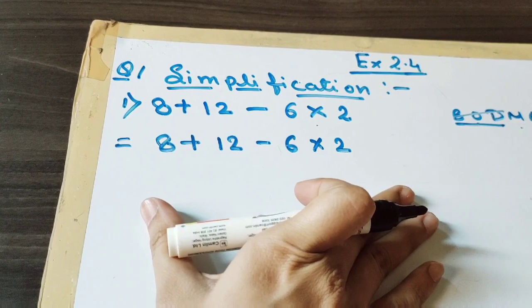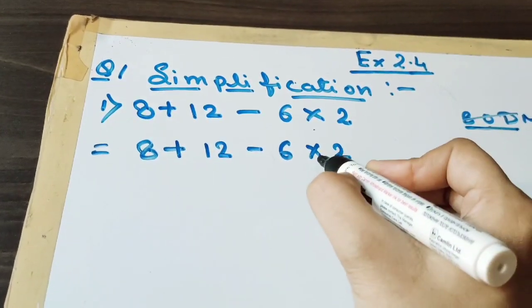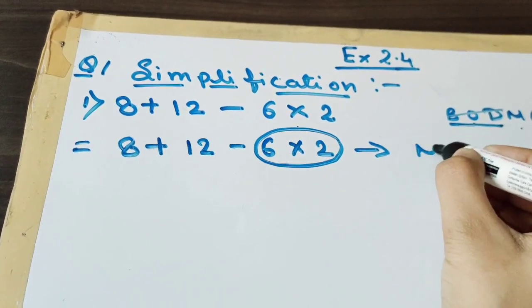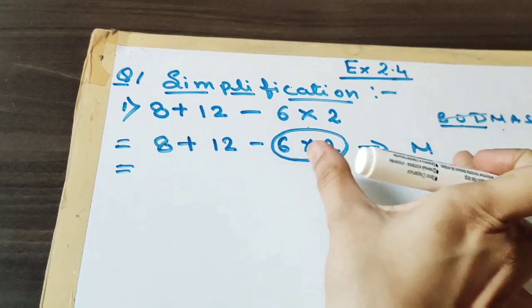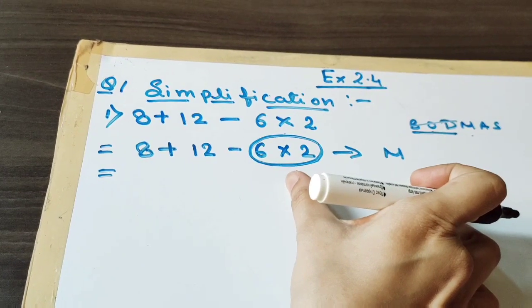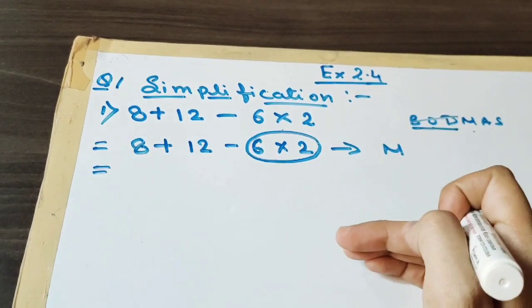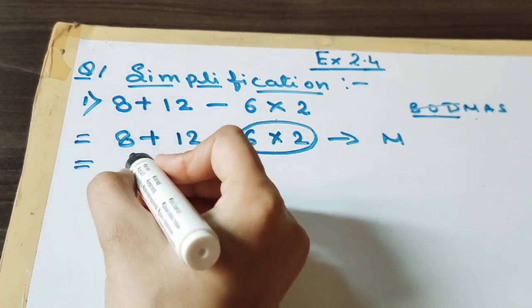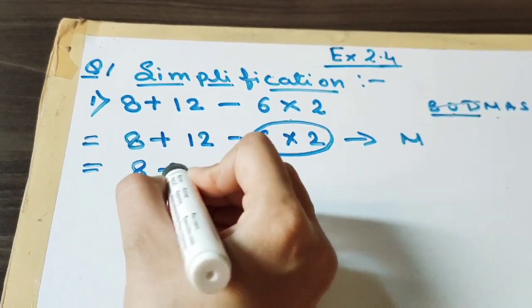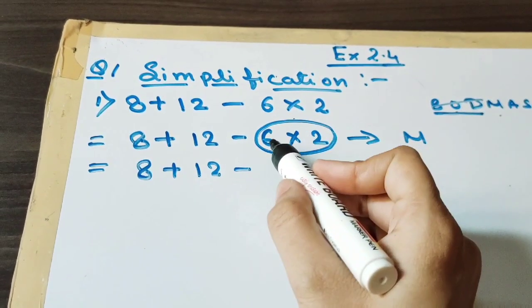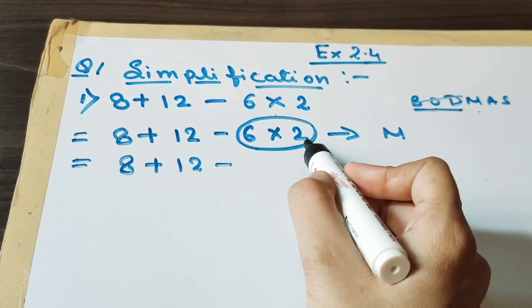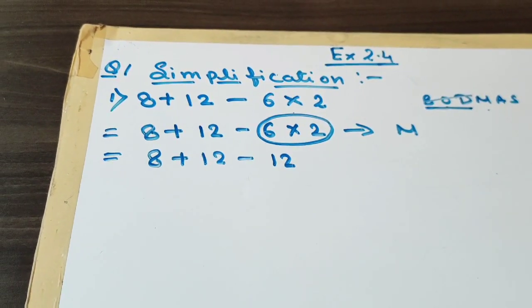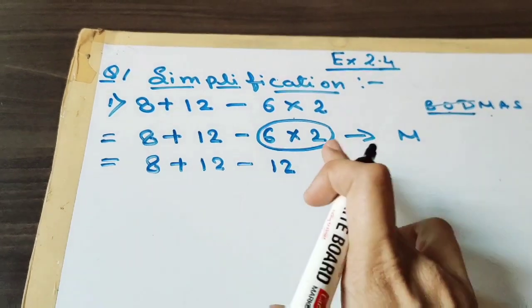I have written the same question as it is. Now there is a multiplication sign, so first we have to do multiplication. In the next step we will multiply and write the answer. So we will write it again as it is: 8 plus 12 minus — and 6 multiplied by 2 is 12. So we got the multiplication result here.